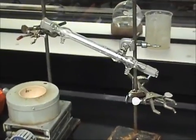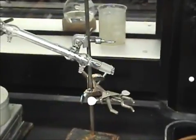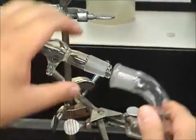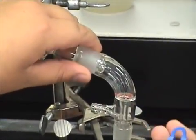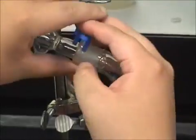Now, we can add the vacuum adapter to the skinny end of the condenser tube. Place a clip to secure the joint. Big side of the clip on the adapter, small side on the condenser tube.